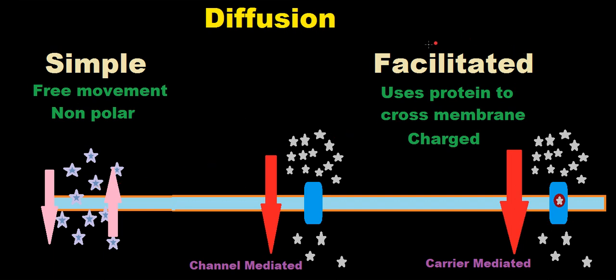Facilitated diffusion is a little bit different. This uses a protein to actually cross the membrane. This is the protein right here in blue, this large protein which is spanning the course of the actual membrane here.